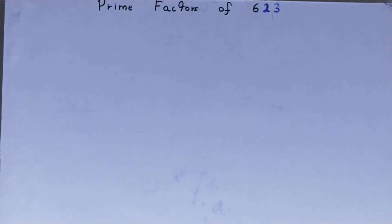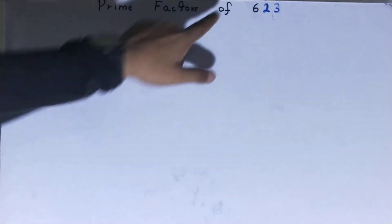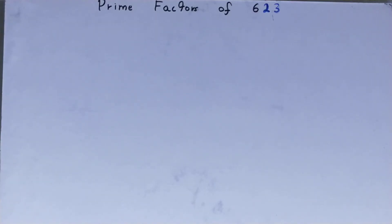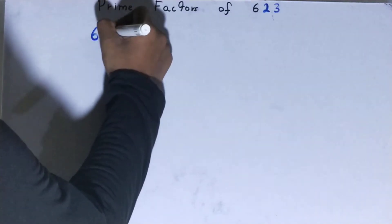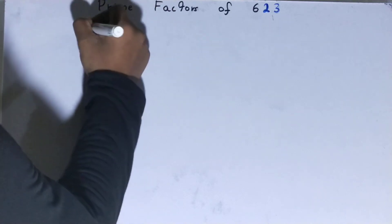Hello friends, and in this video I'll be helping you with the prime factors of the number 623. So let's start. To find out prime factors of the number 623, you need to write the number like this.